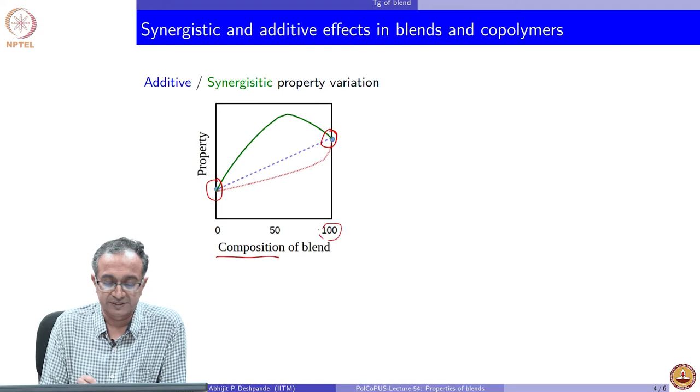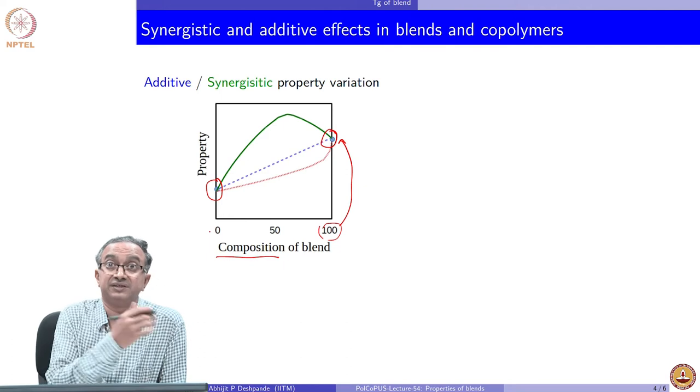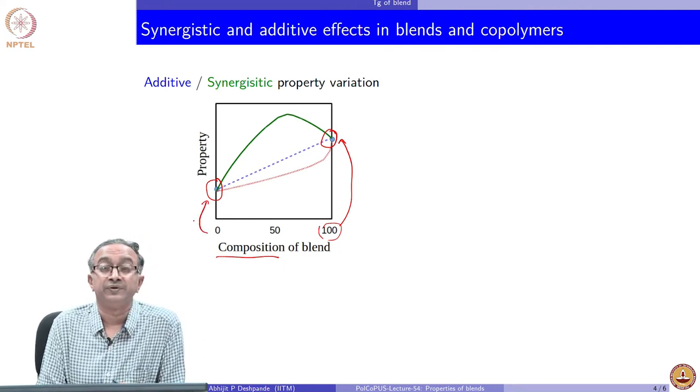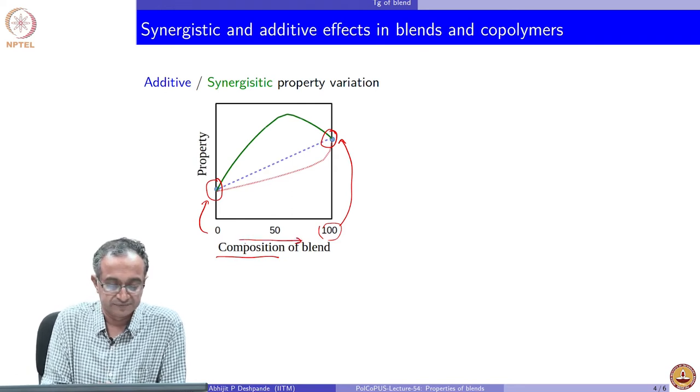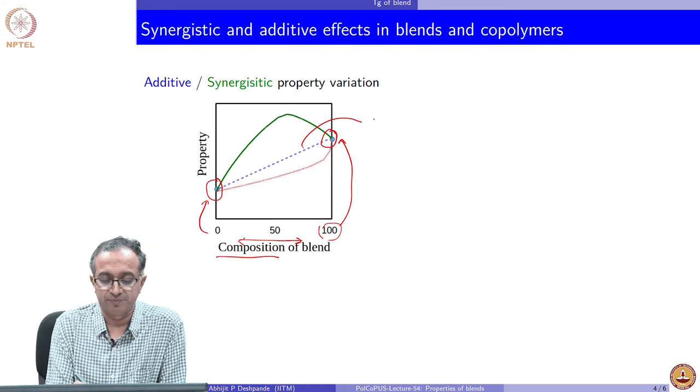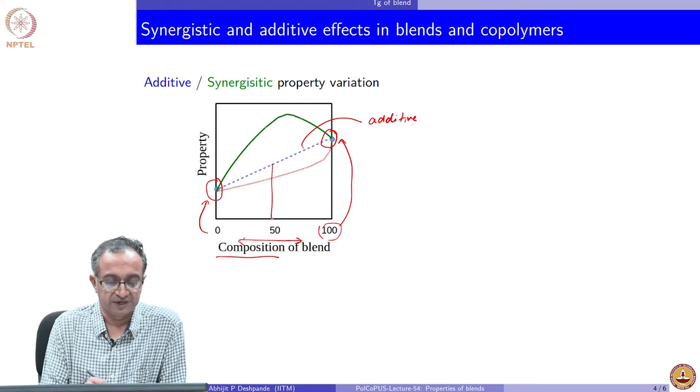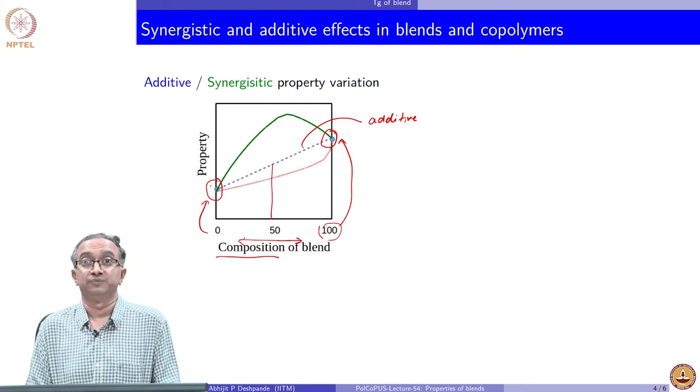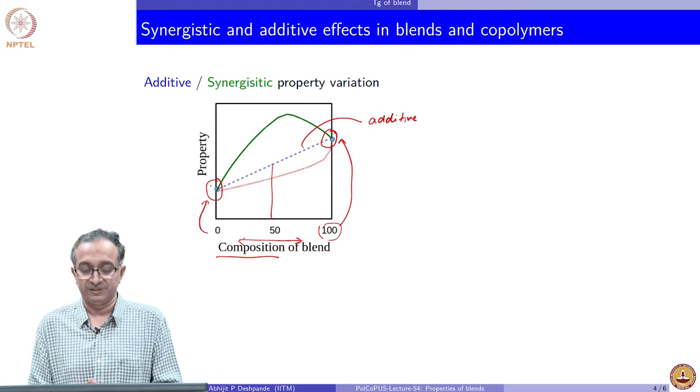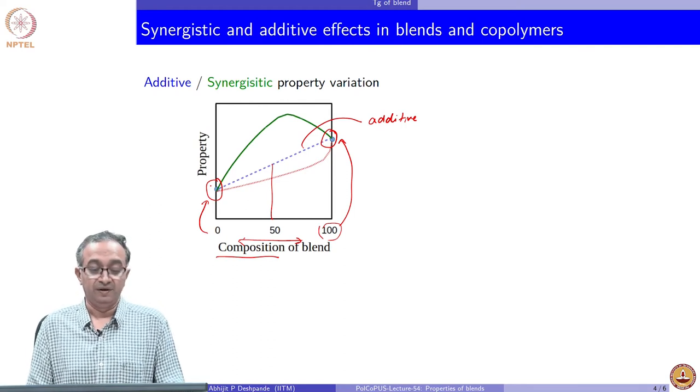When we think in terms of composition of the blend, we are going from very low value of a property to a high property. Whenever it is 100 percent one particular component, the property is high. When it is 0, which means it is the other component 100 percent, then the property is low. What is the variation when we change the composition? The blue line here is basically just a pure additive. If I do 50-50, the property will be exactly in between the two. If I do 25-75, the property will be closer to one component. This is just a linear addition of two properties together.